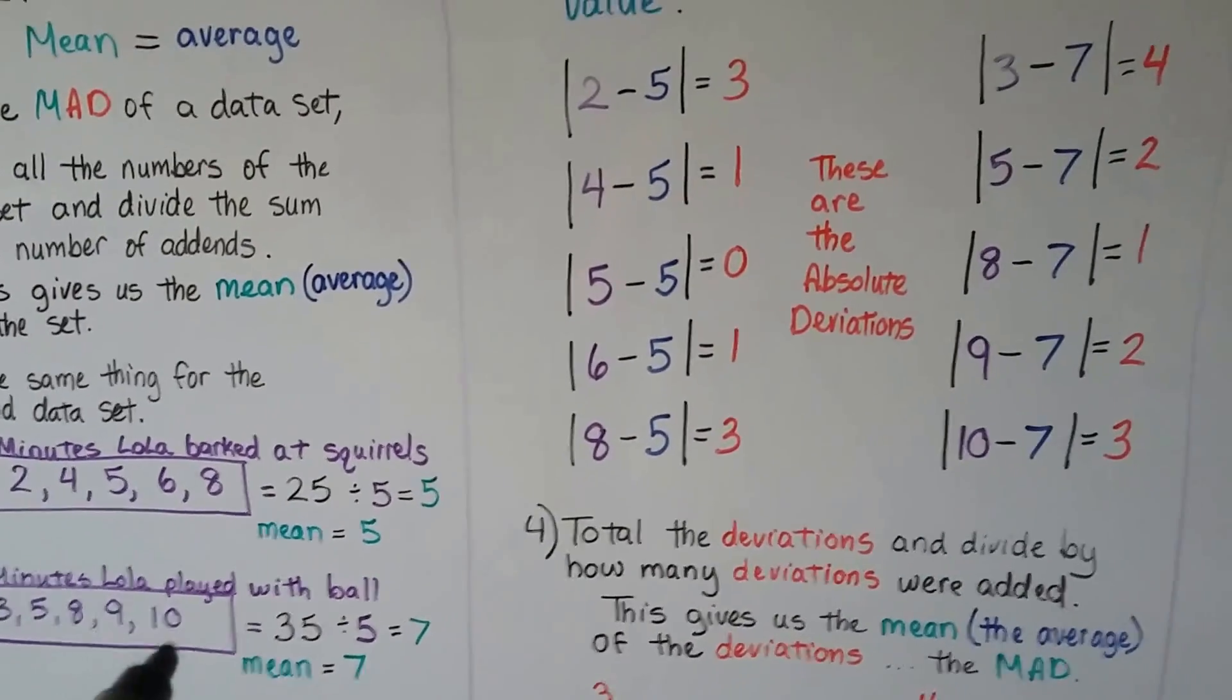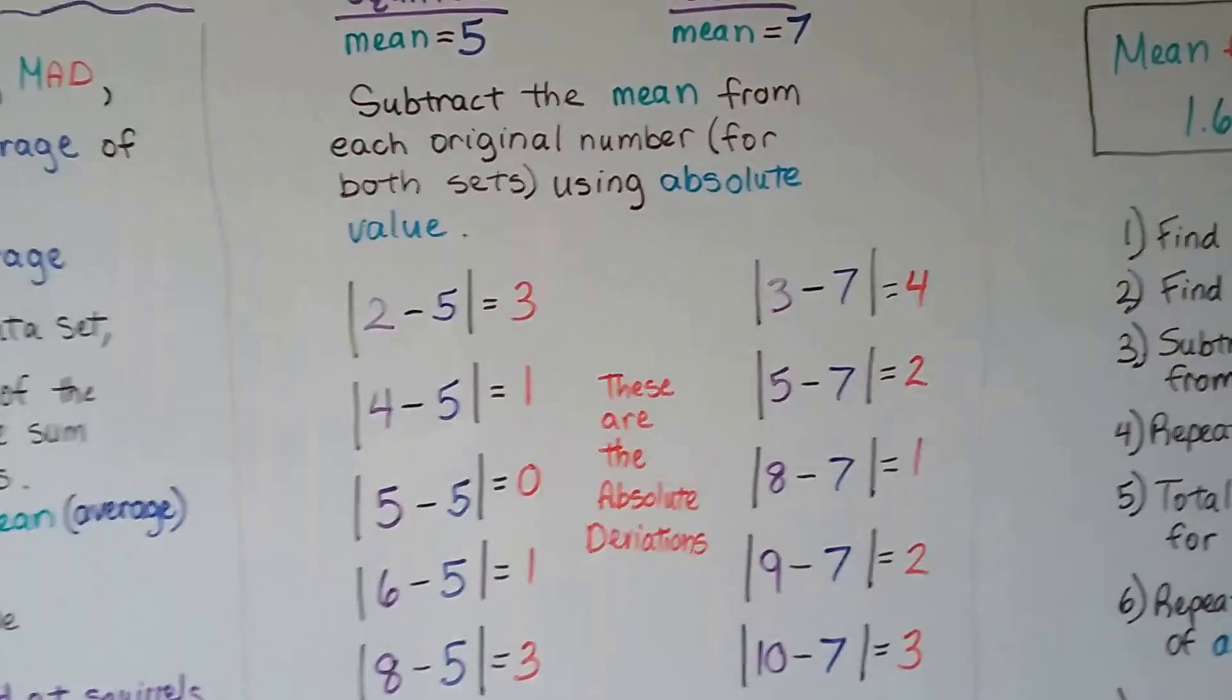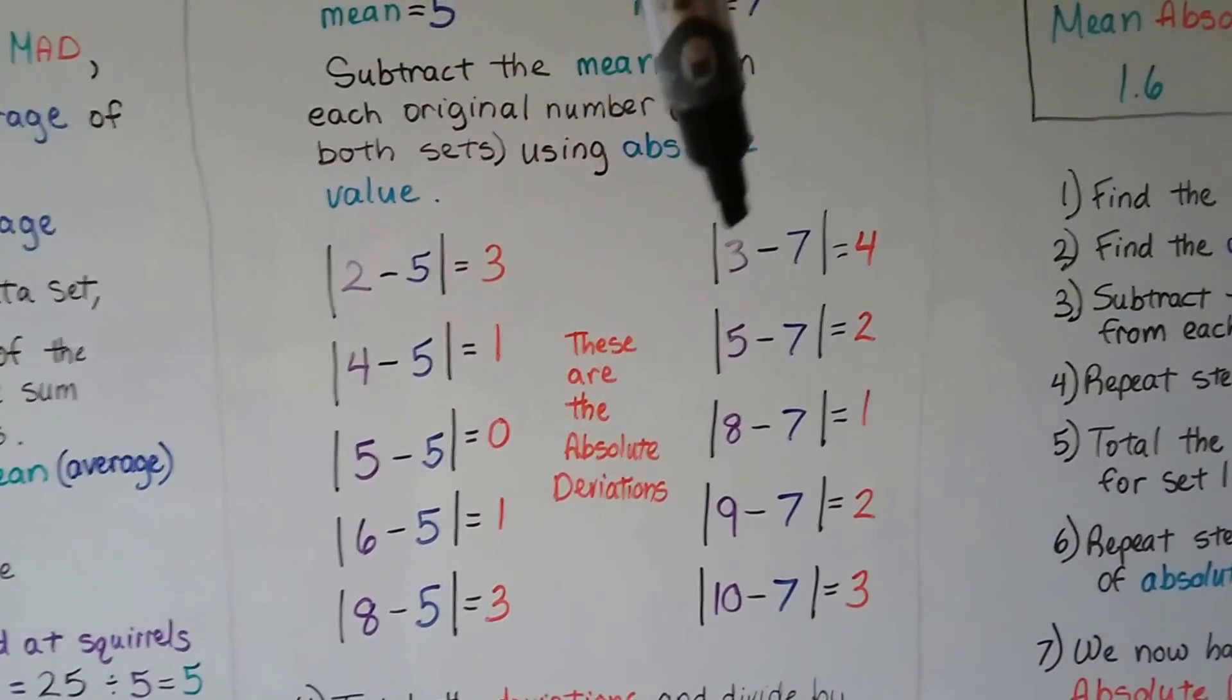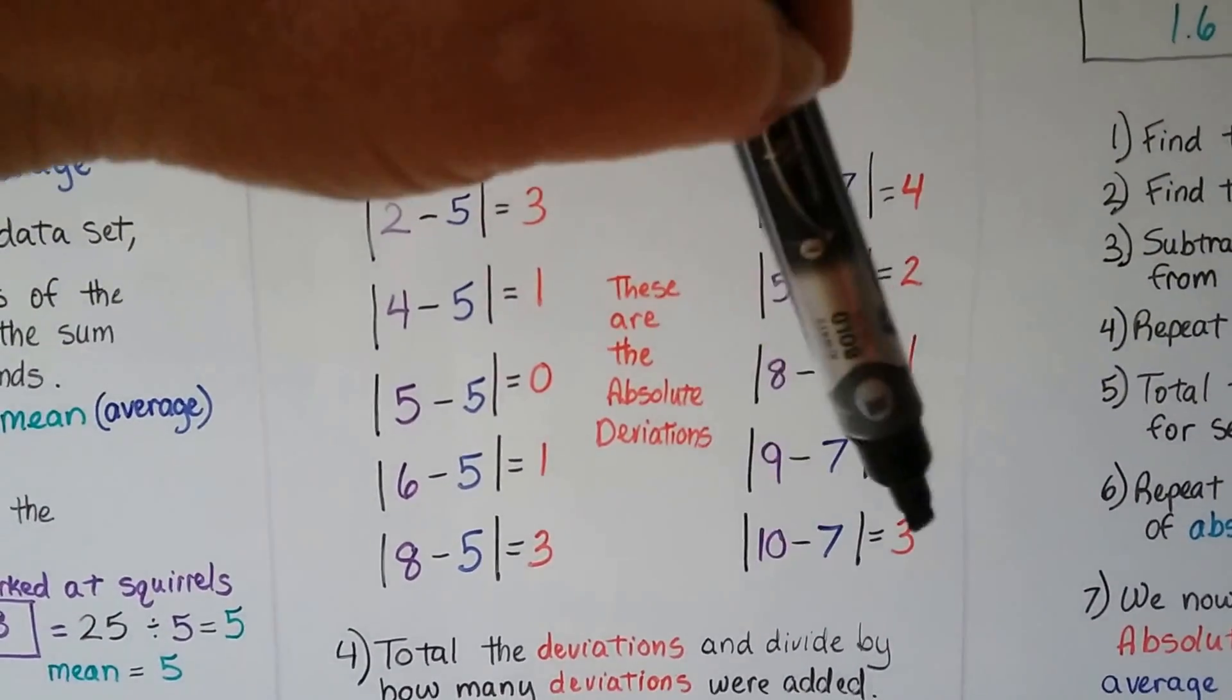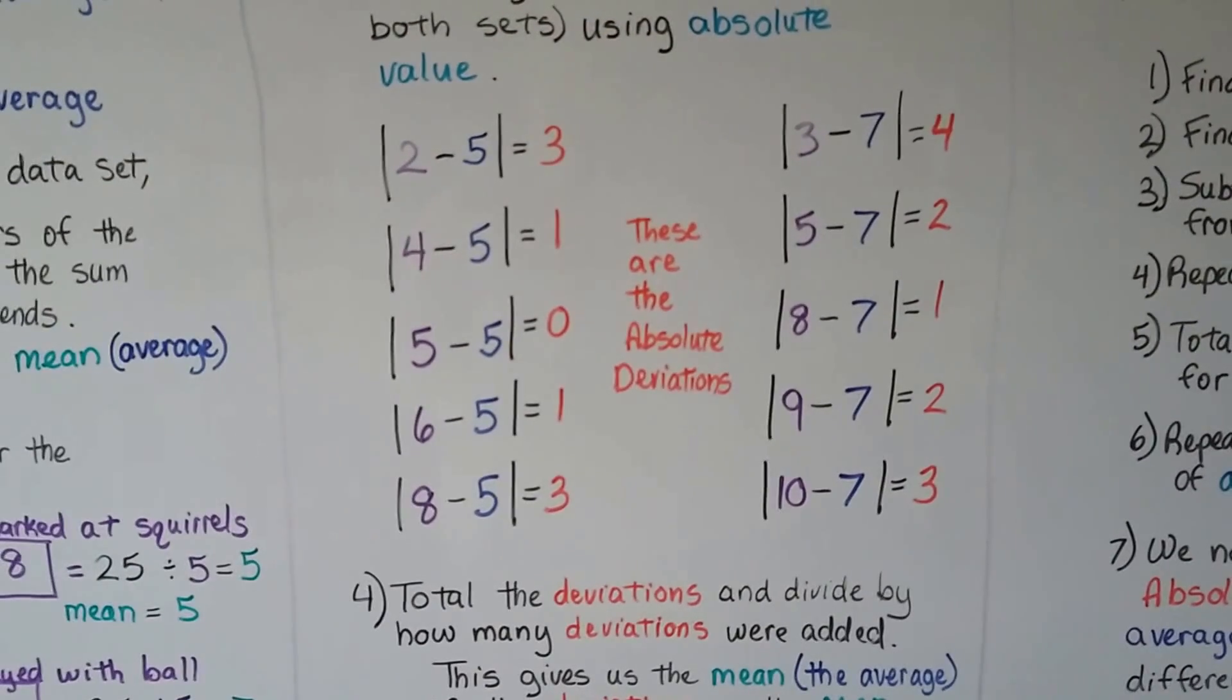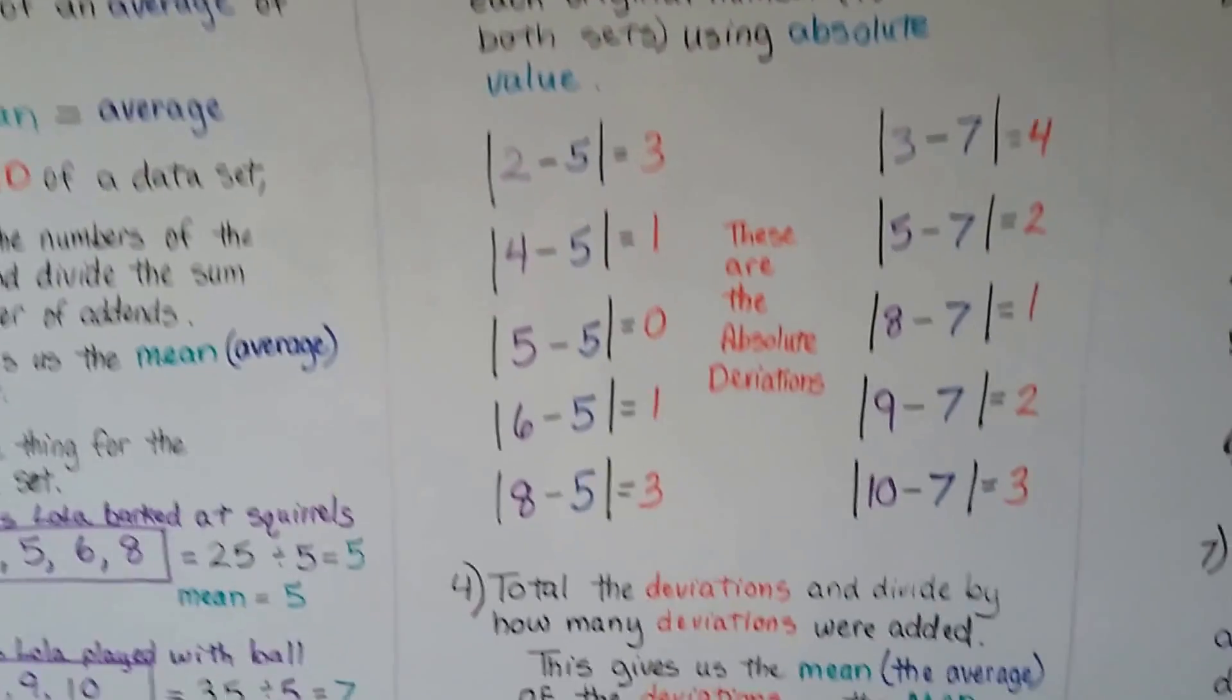We do it for the second data set. We have a 3, 5, 8, 9, 10. Here they are, and we're going to subtract this mean of 7 that we got. We're finding the absolute value, so there's no negatives. The difference between a 3 and a 7 is a 4. Between a 5 and a 7 is a 2. We have a 1, a 2, and a 3. These red numbers, these are the absolute deviations. They're not the mean absolute deviations. They're just the absolute deviations. Now we need to do the mean part.